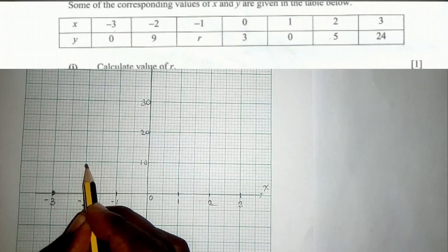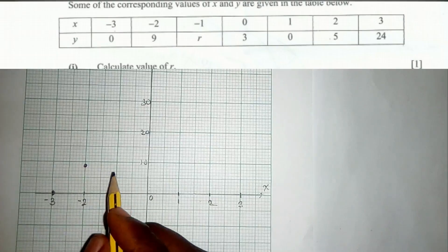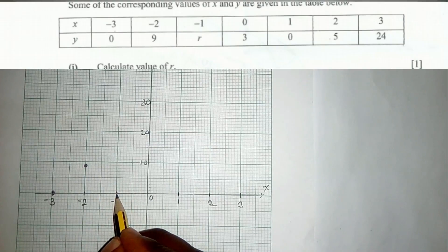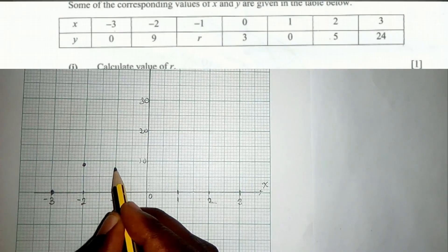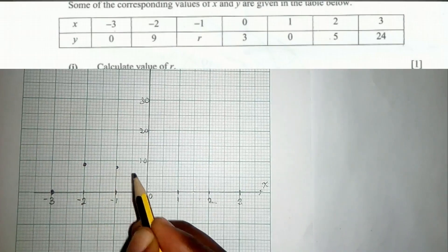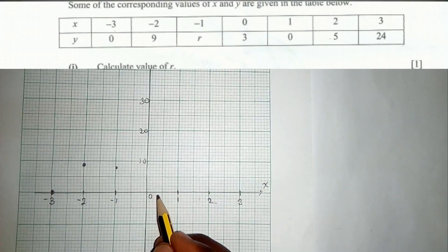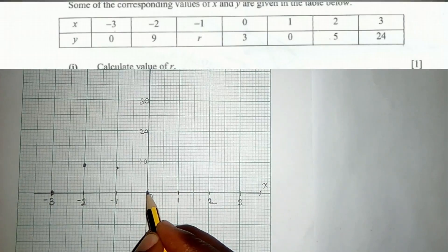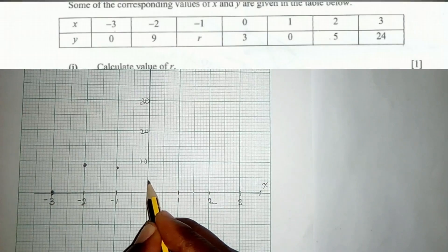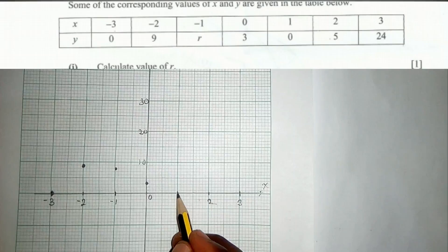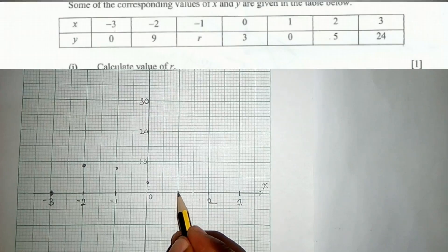Next we go to (−1, 8). Negative 1 on the x-axis is here, and 8 on the y-axis is here. Next we go to (0, 3): zero on x, and counting 1, 2, 3 on y — that point is here. Next we go to (1, 0), which is here.